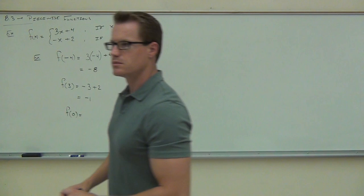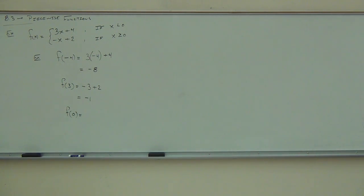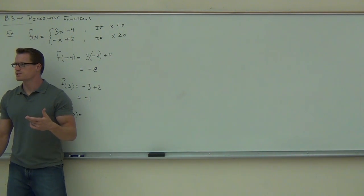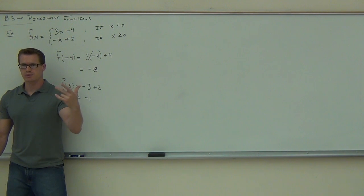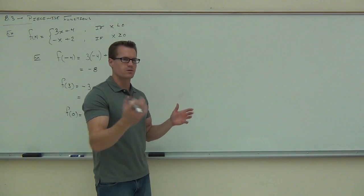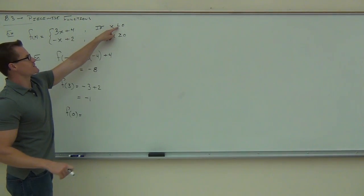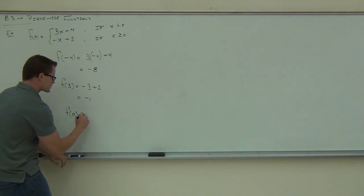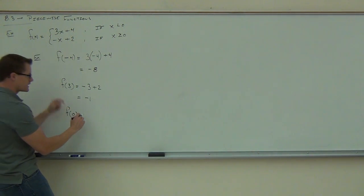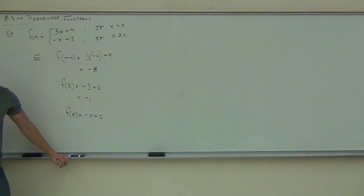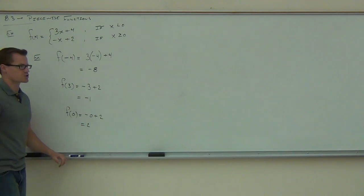Is it okay to plug in zero? Yes. Is it going to be plugged into both functions? No — the bottom one says greater than or equal to zero. Since we have the actual value of zero, and the top is strictly less than zero, we can't use the top. We are going to use the bottom: negative zero plus 2. Negative zero does nothing for us, so we get just 2.